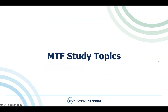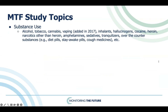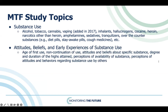The MTF study covers a variety of topics over historical time and throughout individuals' life courses. Substance use includes alcohol, tobacco, and cannabis use in different reporting intervals, such as lifetime, in the past 12 months, and in the past 30 days. Questions related to vaping were added in 2017. Other illicit substances include inhalants, hallucinogens, cocaine, heroin, and over-the-counter substances. The MTF study also includes various measures related to attitudes, beliefs, and early experiences of substance use, including age-at-first use, non-continuation use, beliefs or attitudes about specific substances, and perceptions of substance use.